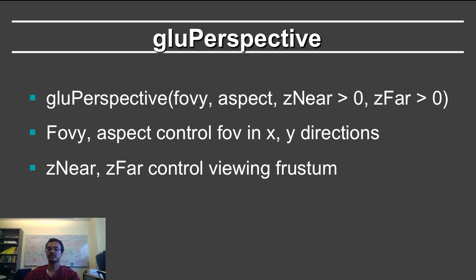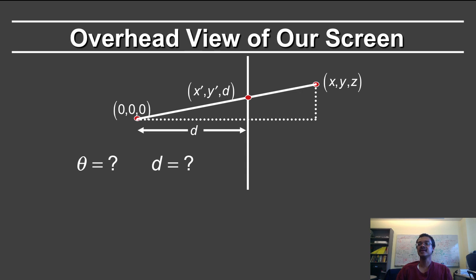So the field of view in the aspect ratio control the field of view in the x and y directions, and z near and z far control the viewing frustum. Here is the overhead view of our screen again. And we will be interested in computing the quantities theta and d. This quantity is theta, and this is given simply by the field of view in the y direction divided by 2. So the total field of view is 2 theta. What is d equal to? Just from the geometry of the situation, we want to map things again onto the unit cube. So this is one unit. And from trigonometry, we know that tan theta is equal to 1 over d, which means d must be equal to cotangent of theta.